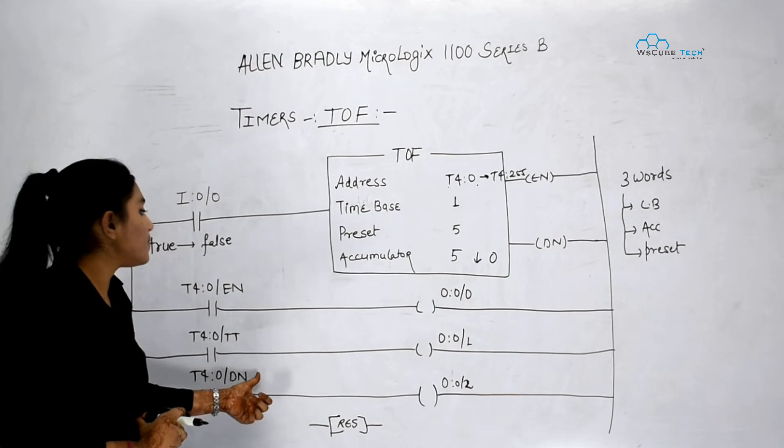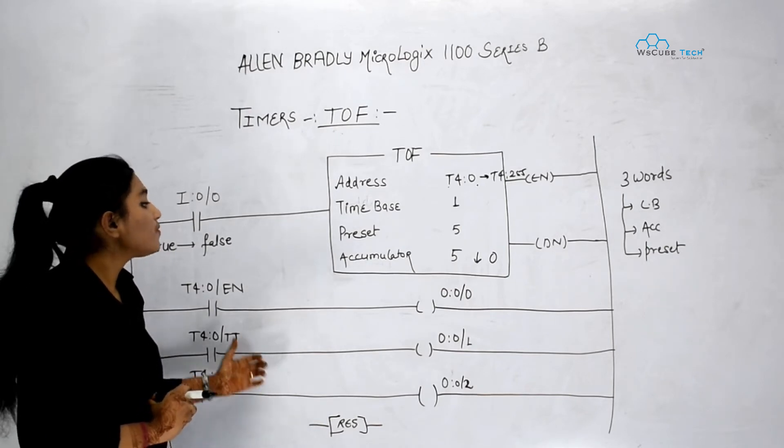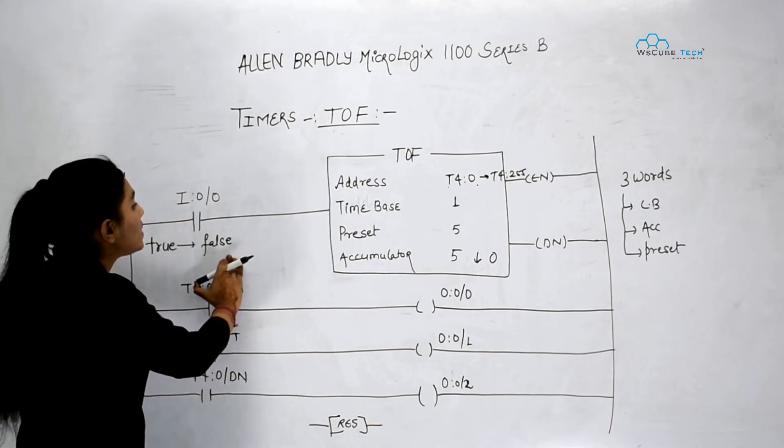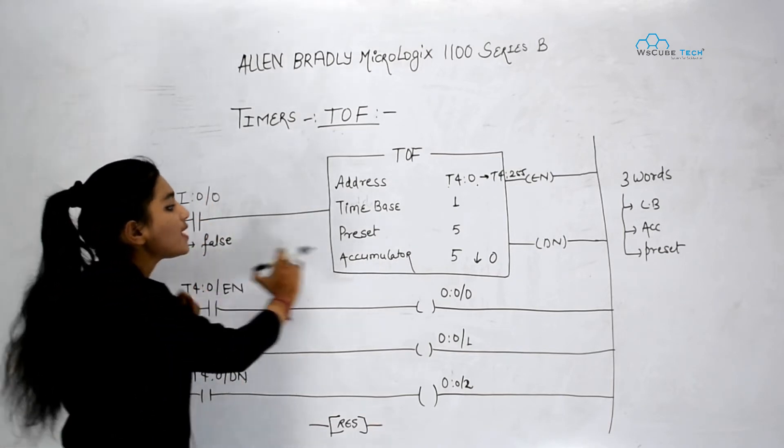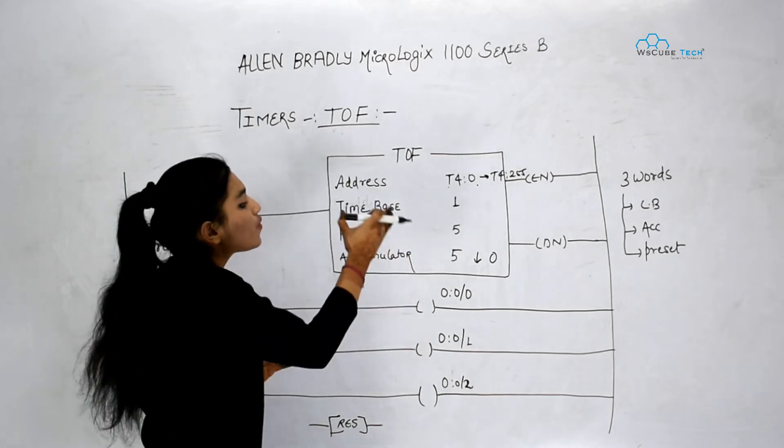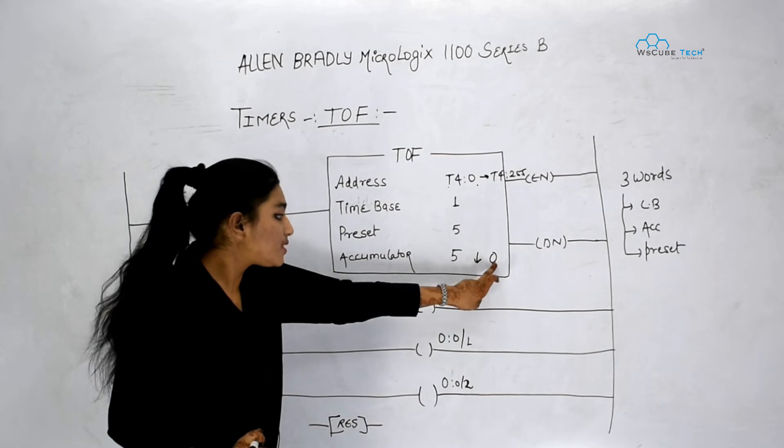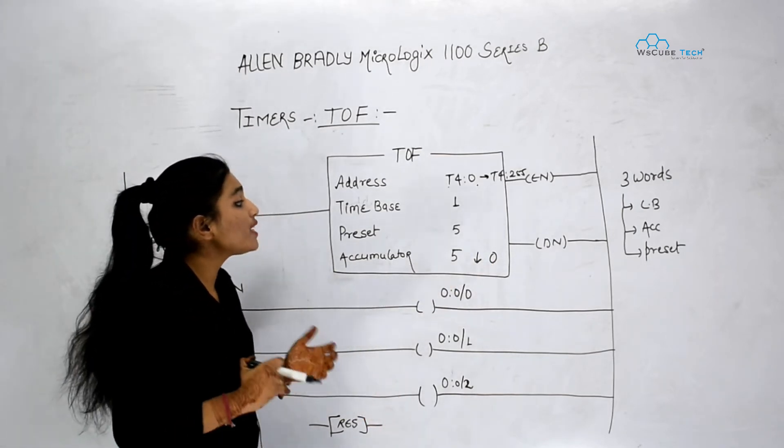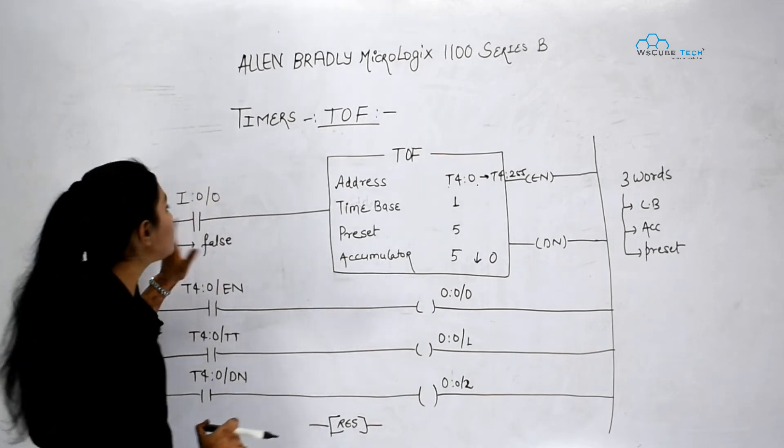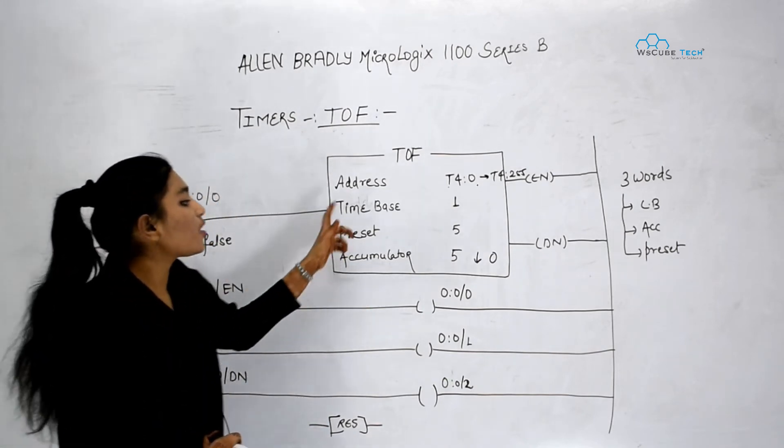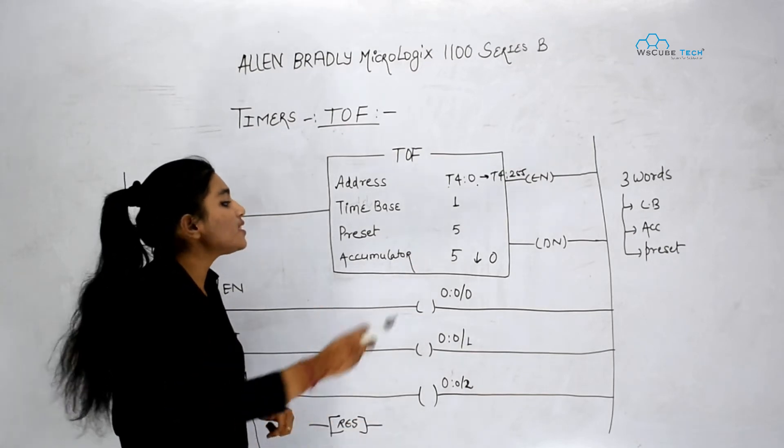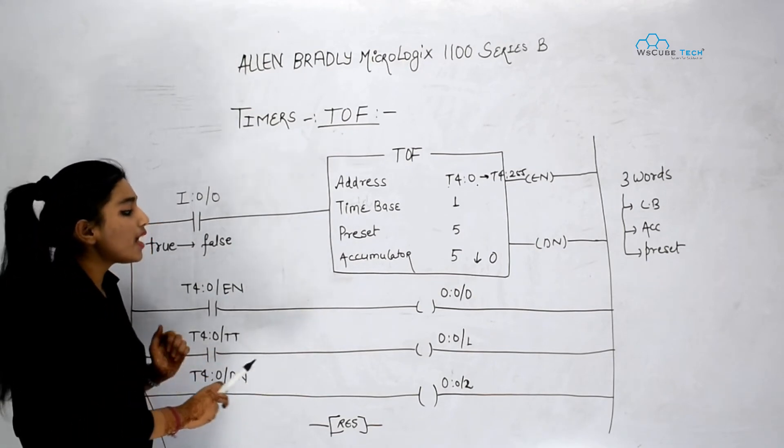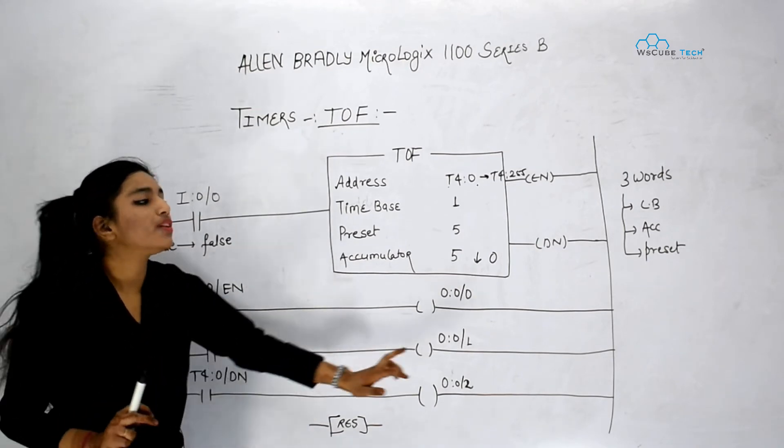Next we have got done bit. So done bit will be 1 when my accumulator is not equal to 0. It means when my rung becomes false, this input becomes false and accumulator will start decreasing. So 5, 4, 3, 2, 1 and at 0 my done bit will be 0 and output will get off. So this is how we can see that I have removed this input, it means my rung is false and then accumulator will start decreasing and after 5 seconds its value becomes 0. So for that 5 seconds my done bit is 1 and after 5 seconds done bit becomes 0 and output will get off.